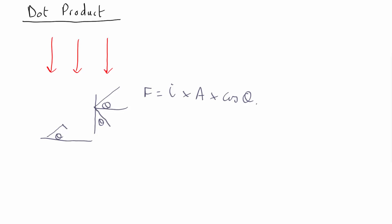If you remember, the dot product of two vectors is just the magnitude of one times the magnitude of the other times cos theta. So that looks very similar to this formula.